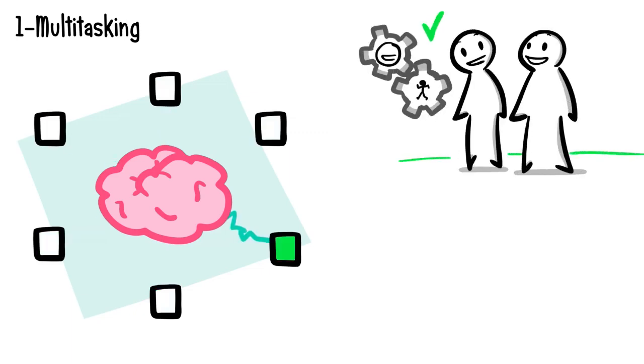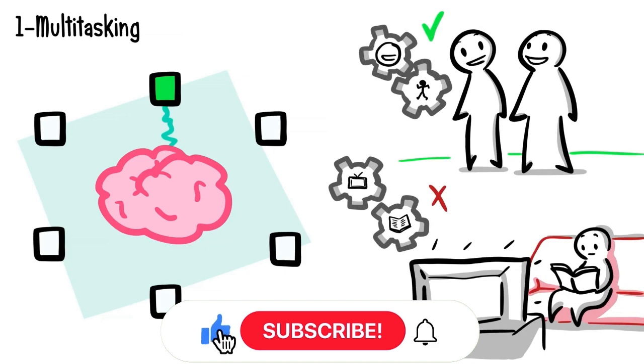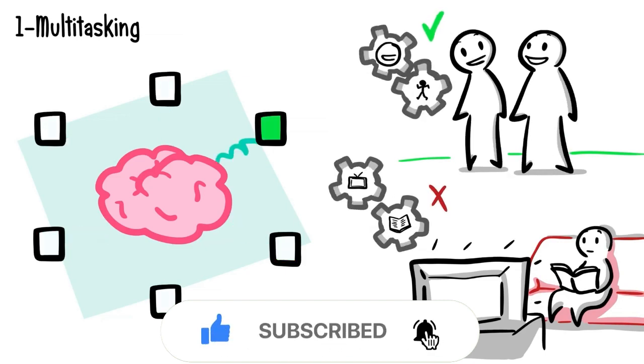The reason we can talk and walk at the same time is because these behaviors are automatic. On the other hand, your brain cannot process simultaneously tasks that require high levels of brain function. For example, reading a book and watching television at the same time.